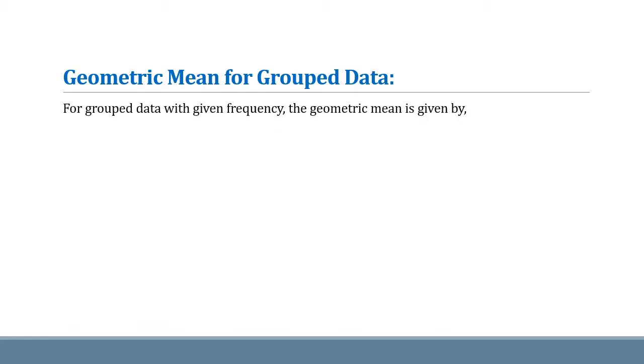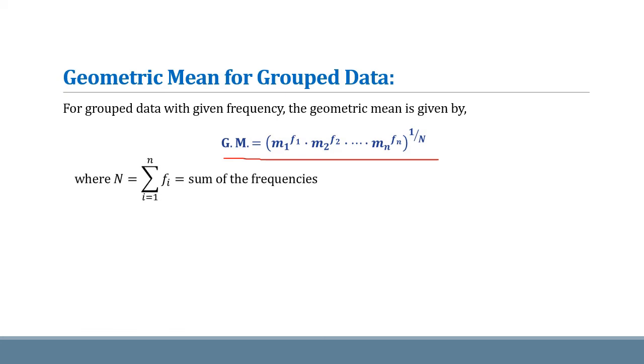Now we see the geometric mean for grouped data. Whenever grouped data is given, that means the observations are in interval form. For grouped data with given frequency, the geometric mean can be calculated using this formula. Here, m1, m2 up to mn are the mid values of all the intervals, and capital N is the sum of the frequencies.